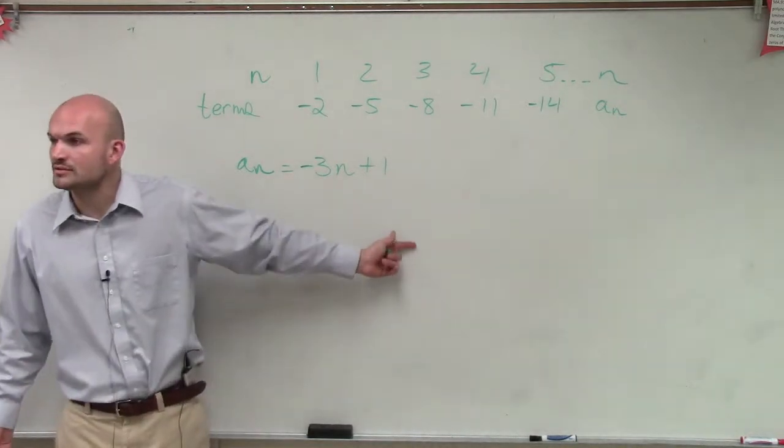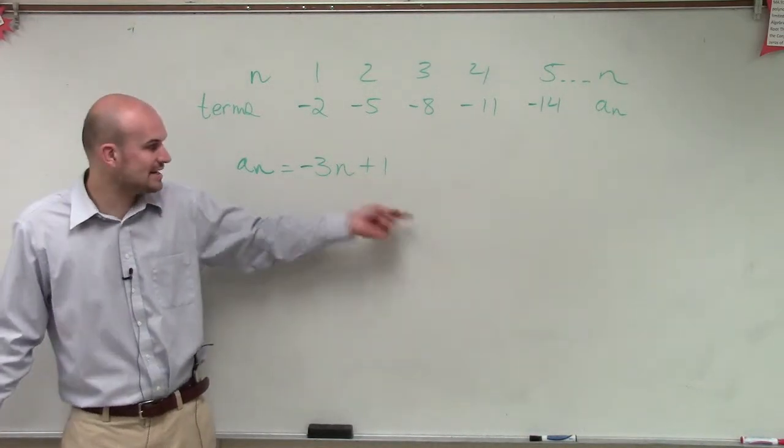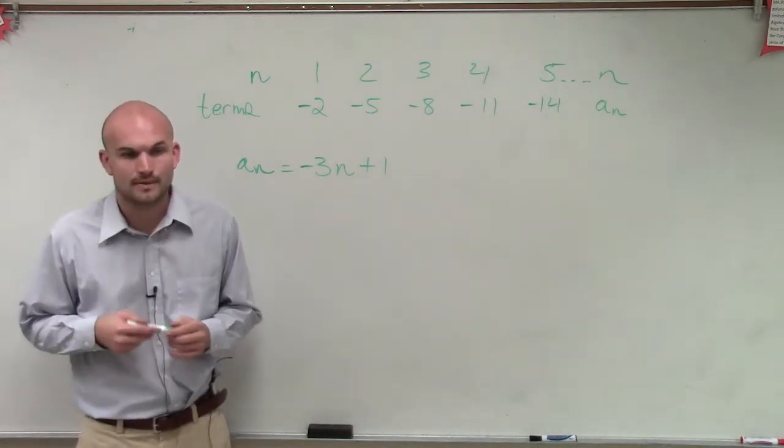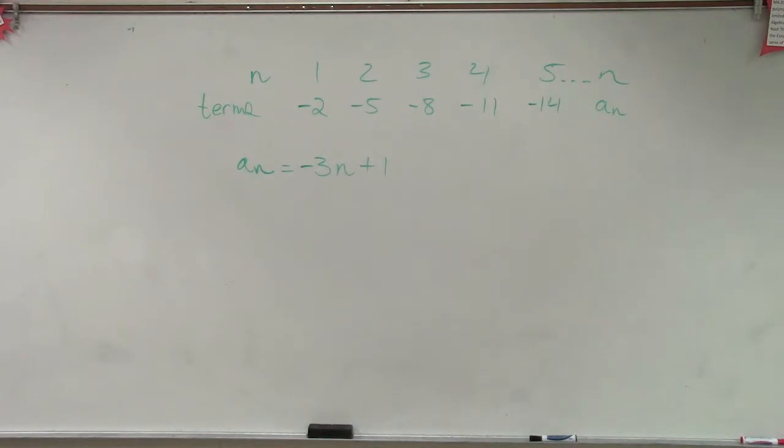So just by using some mathematical reasoning, yes, you're able to figure out the rule. Well, it's going to be negative 3n plus 1. Very good. So that's the easy one.